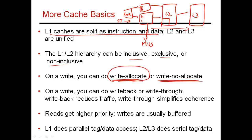Depending on the kinds of programs you run, you'll either use a write allocate or write no-allocate policy, and write allocate ends up being the most popular. Then also on a write, you can do write back or write through. In a write through policy, assuming an inclusive hierarchy where there's a copy of block A in L1, L2, and L3 — when I do a write into A, I don't just update the copy in L1; I also update the copy in L2 and the copy in L3. So every write basically propagates through the different levels of the hierarchy.